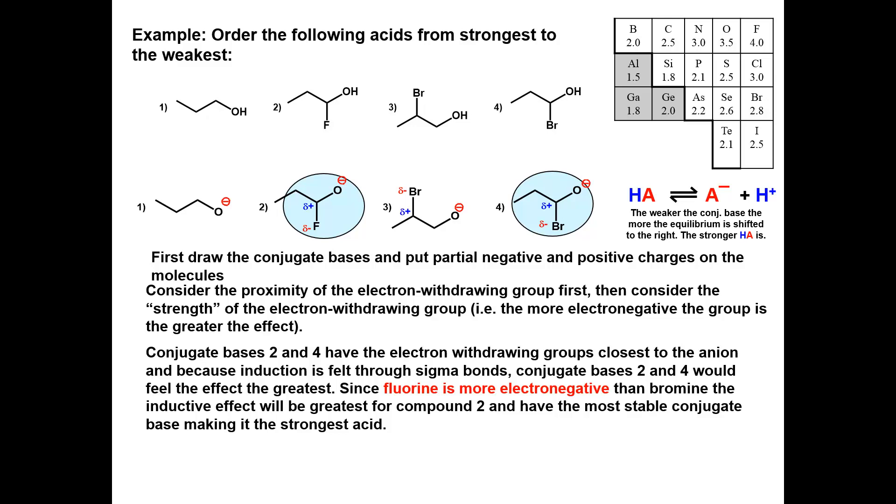Since fluorine is more electronegative than bromine, the inductive effect will be greatest for compound 2 and have the most stable conjugate base, or the weakest conjugate base.